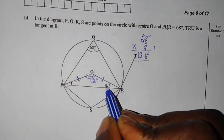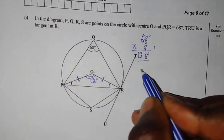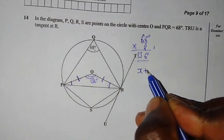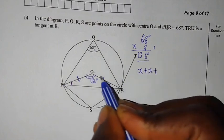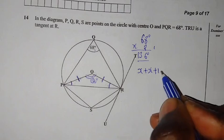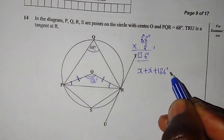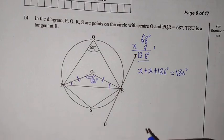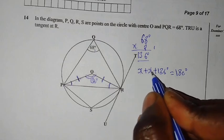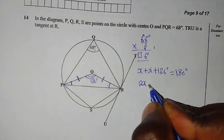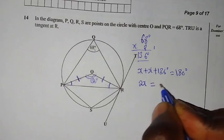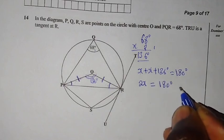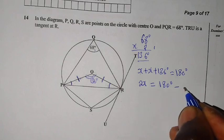We assume that here we have X. So even here we can have X. So you say X plus X plus this angle here which is 136 degrees. This will give us 180 degrees, which is the sum of angles in a triangle. So X plus X, this will give us 2X.